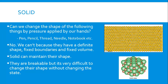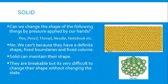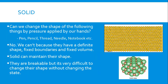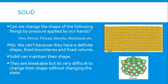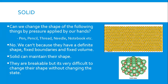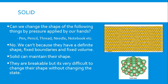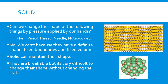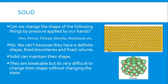Let's start with solid. Can we change the shape of things like a pen, pencil, thread, needle, or notebook without breaking them? These things cannot change their shape without applying heat or other forces. Applying pressure alone won't change their shape. This is because solids have a fixed shape, fixed boundaries, and fixed volume — they maintain their shape.